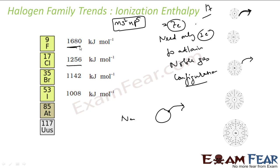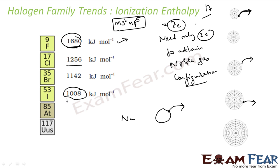The ionization energy is therefore very high — the value is 1680 kilojoule per mole, which is a very high value. The ionization energy decreases down the group because fluorine is small in size and the fluorine nucleus has a strong control over its electrons and will not let them go. But iodine, being bigger in size, doesn't have much control over the electron on the outermost shell, so it is a little easier to pluck that electron out compared to fluorine. Thus, iodine has a lower ionization energy.